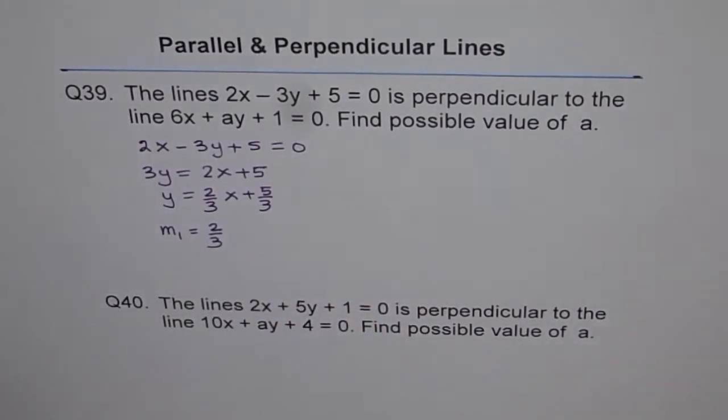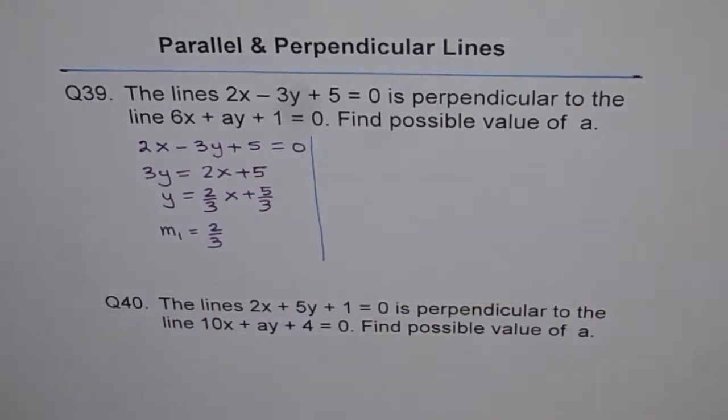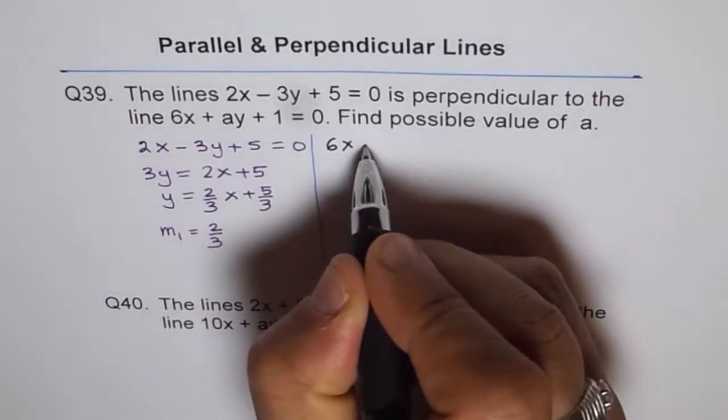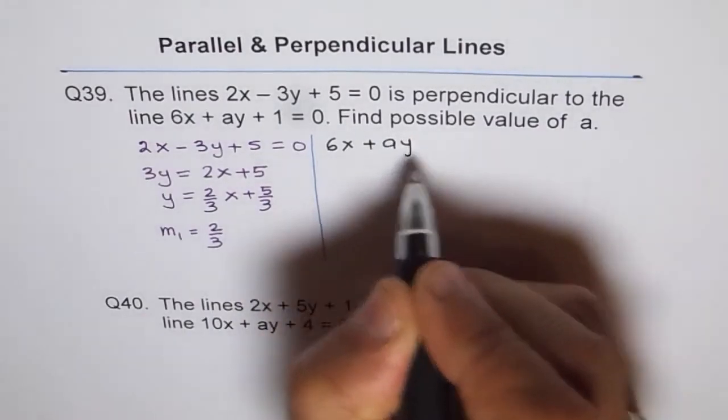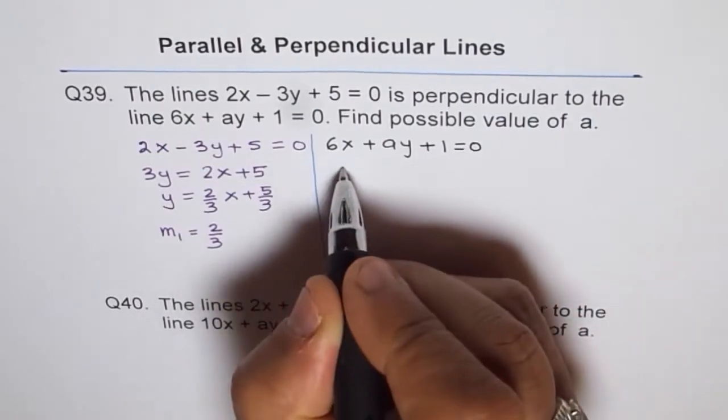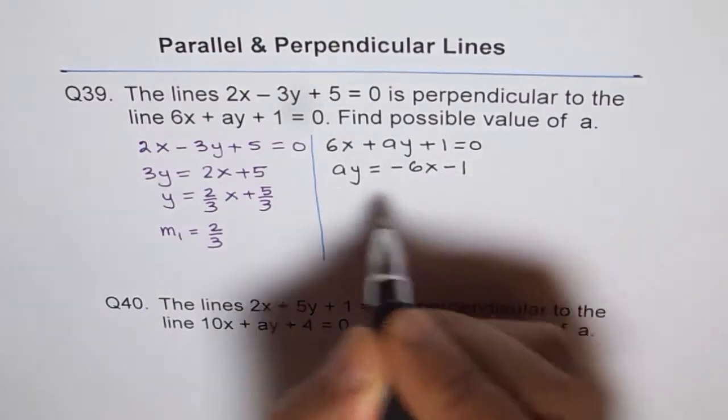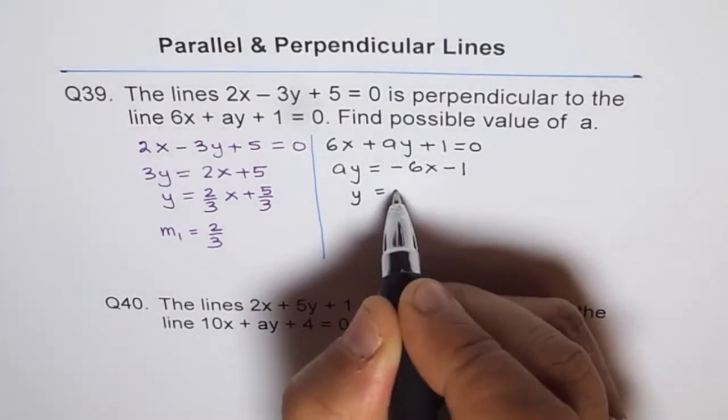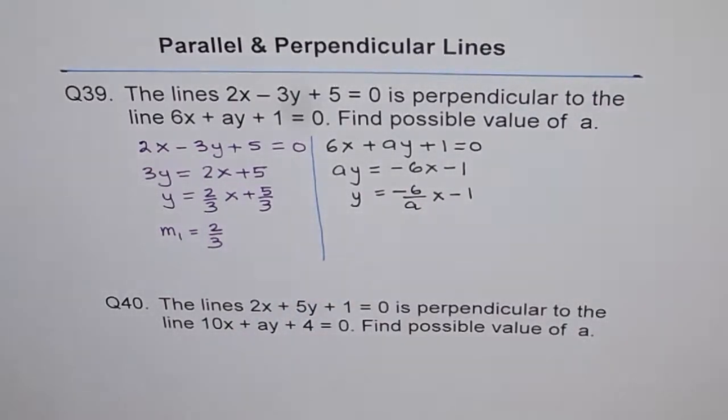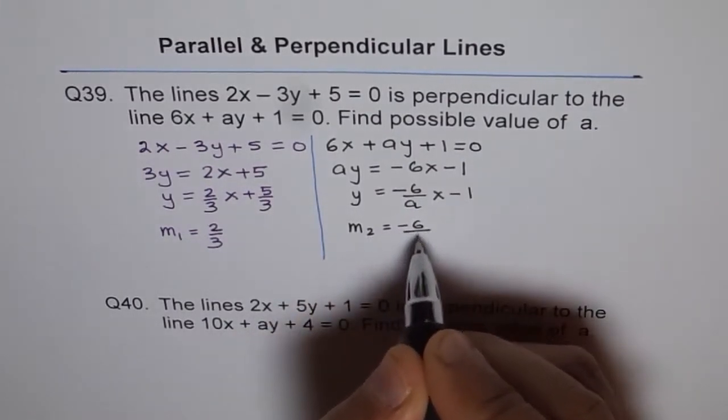Now let's find the slope of the second line. The second line is 6x plus ay plus 1 equals 0. ay equals minus 6x minus 1. And y equals minus 6 over a x minus 1 over a. The slope of the second line m2 is minus 6 over a.